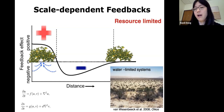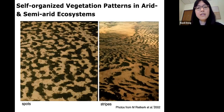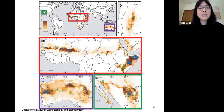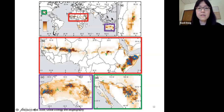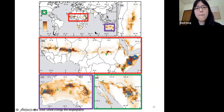This is what self-organized vegetation looks like in real ecosystems. This set of maps shows the spatial distribution of regular vegetation patterns globally — mostly distributed in arid or semi-arid places. We see a lot of them in Australia and the southern border of the Sahara Desert. In the United States, there's only one place with a regular vegetation pattern, located at the border of Texas and Mexico.